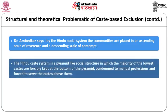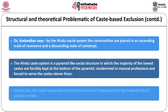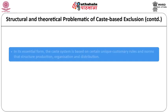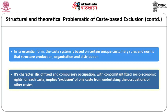The Hindu caste system is a pyramid-like social structure in which the majority of the lowest caste are forcibly kept at the bottom, condemned to manual professions and forced to serve castes above them. Historically, the caste system has formed the economic framework for material life in India. In its essential form, the caste system is based on unique customary rules and norms that structure production, organization and distribution, with fixed and compulsory occupation and concomitant fixed socio-economic rights, implying exclusion of one caste from undertaking the occupation of other castes.